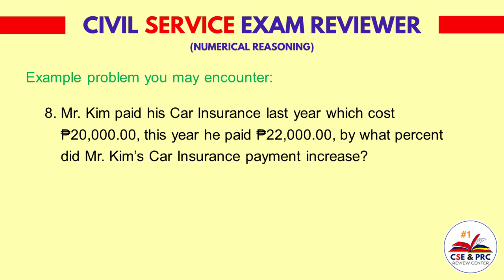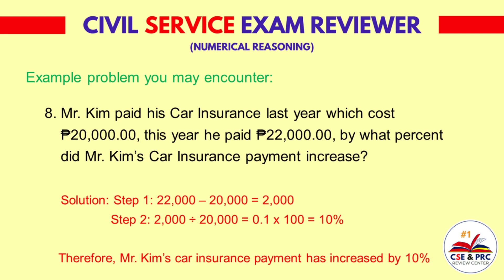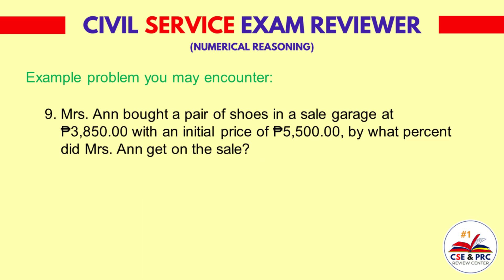Number 8: Mr. Kim paid his car insurance last year which cost 20,000 pesos. This year he paid 22,000 pesos. By what percent did Mr. Kim's car insurance payment increase? Solution: Step 1 — 22,000 minus 20,000 is equal to 2,000. Step 2 — 2,000 divided by 20,000 is equal to 0.1. 0.1 times 100 equals 10 percent. Therefore, Mr. Kim's car insurance payment has increased by 10 percent.